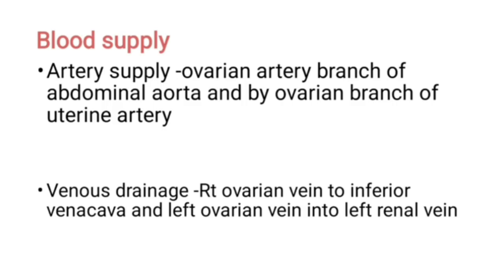Blood supply — arterial supply: the ovary is supplied by the ovarian artery, a direct branch of the abdominal aorta, and also receives supply from the ovarian branch of the uterine artery. These two arteries anastomose to supply the ovaries.